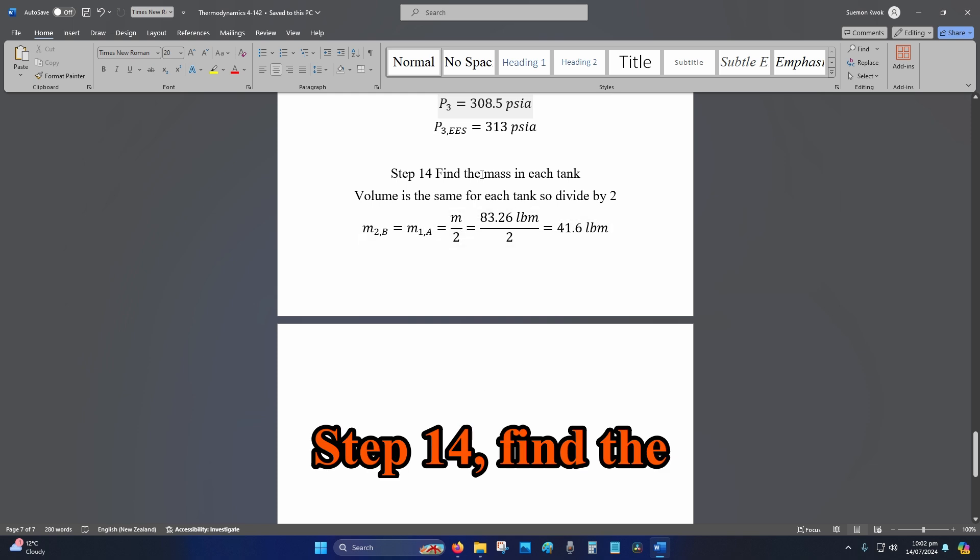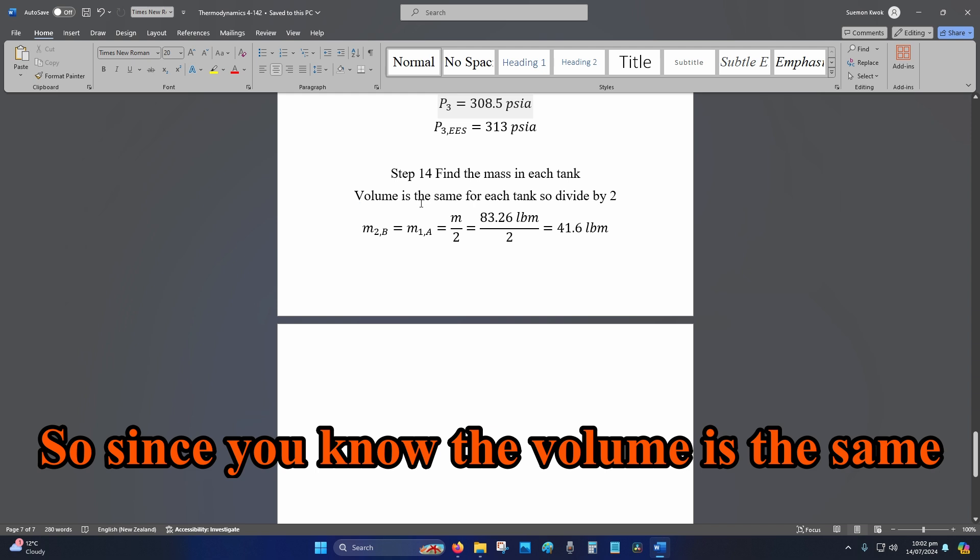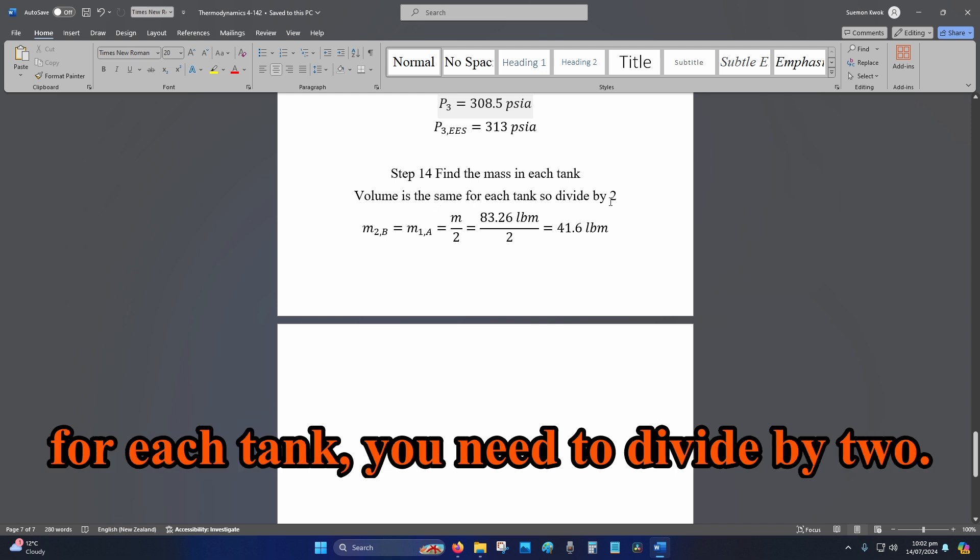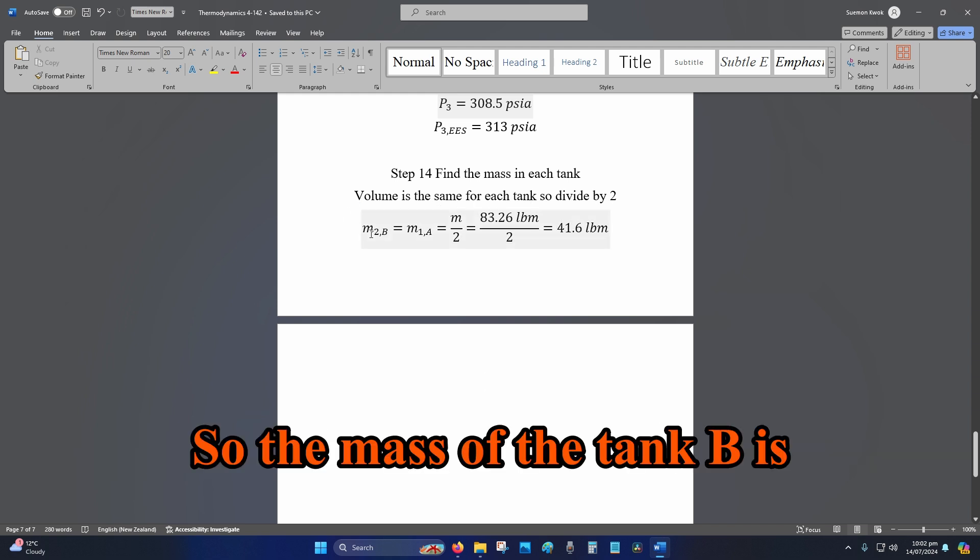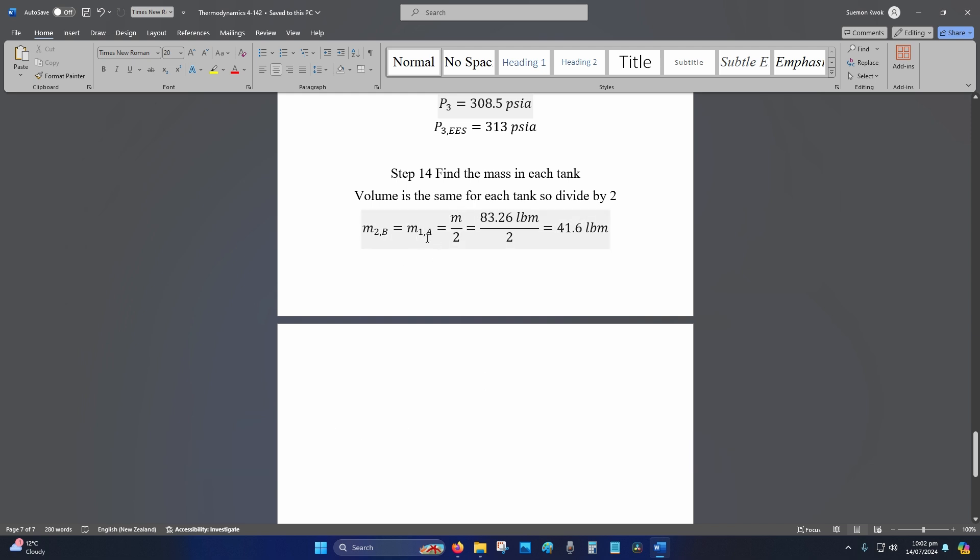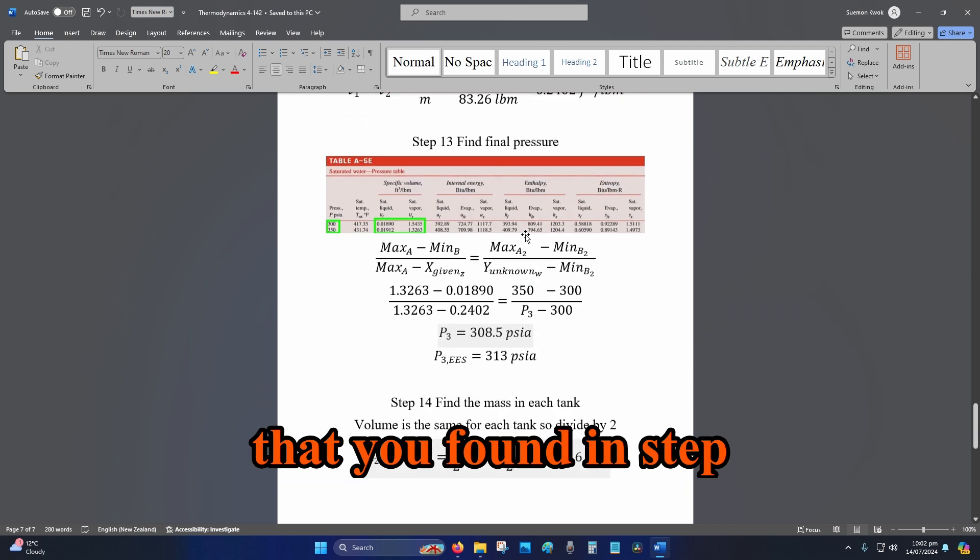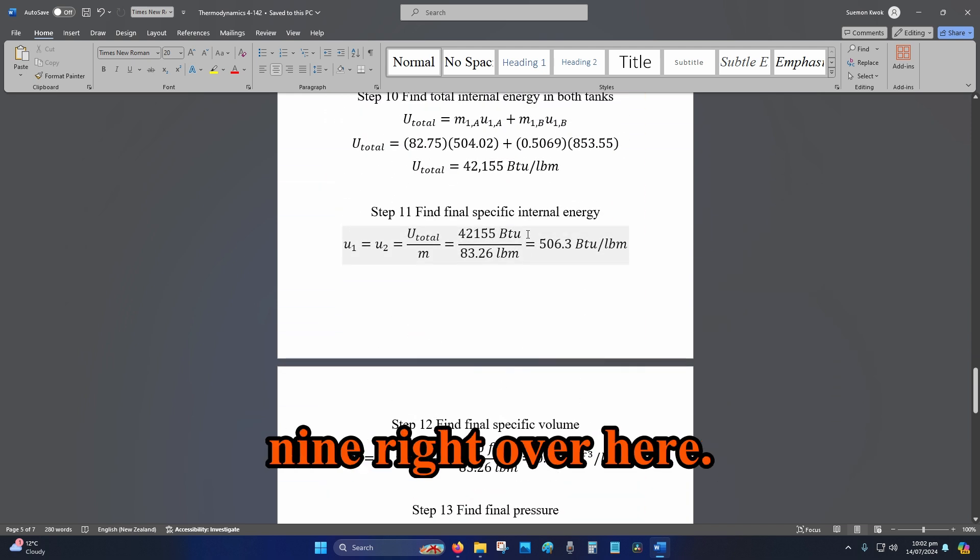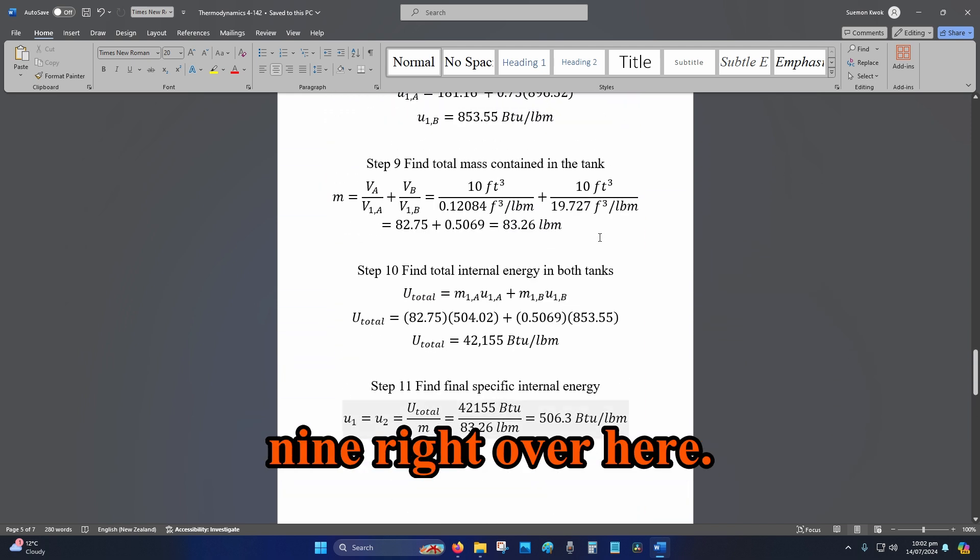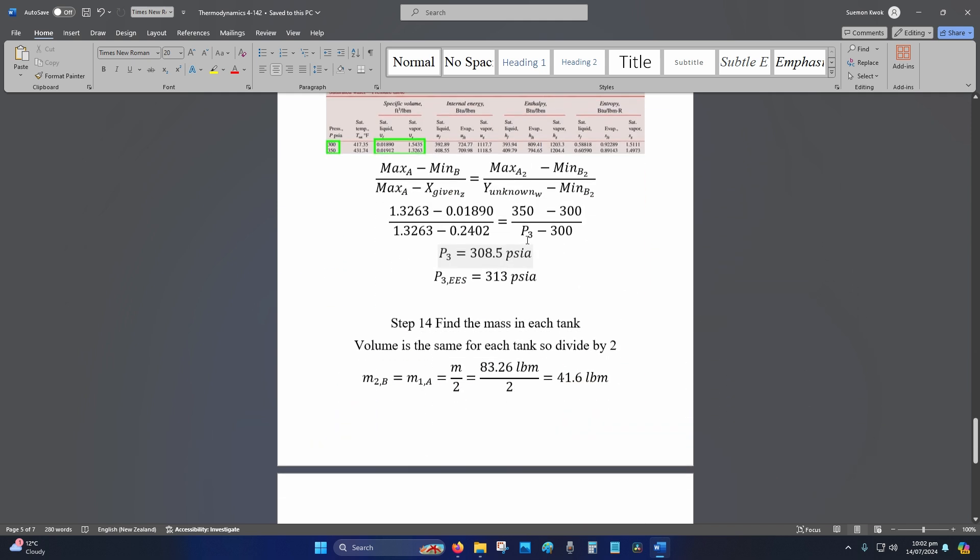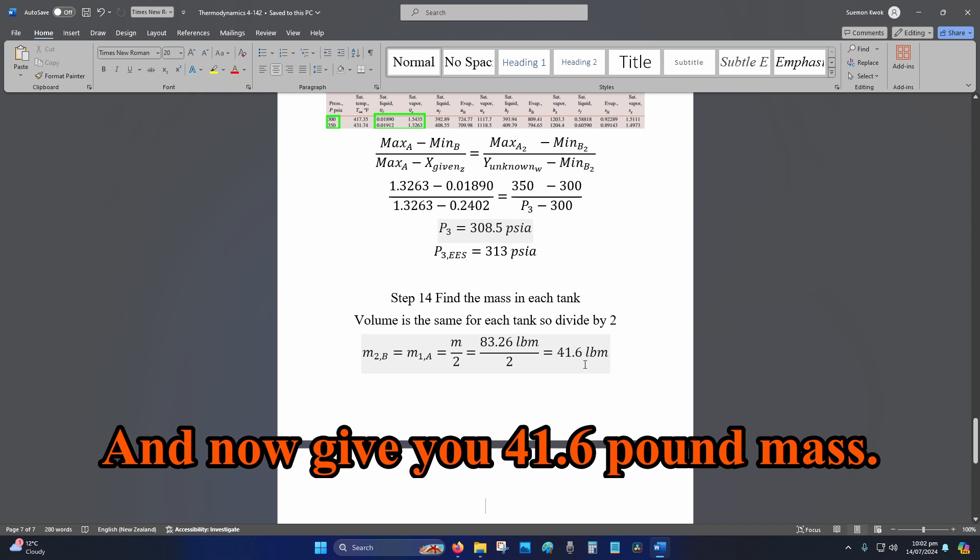Step 14, find the final mass in each tank. So, since you know the volume is the same for each tank, you need to divide by 2. So, the mass of the tank B is equal to the mass of tank A. So, M divide by 2. So, you got this mass that you found in step 9. Right over here. That's the total mass. Divide by 2. And that will give you 41.6 pound mass.